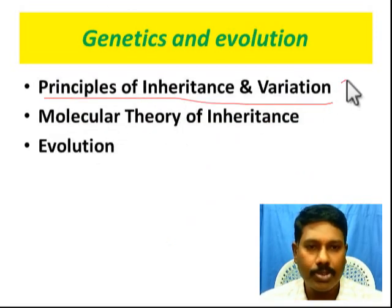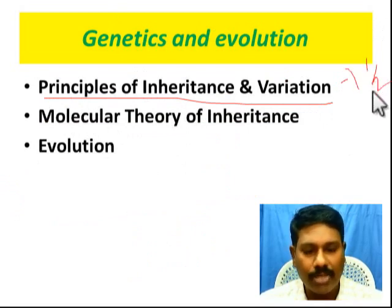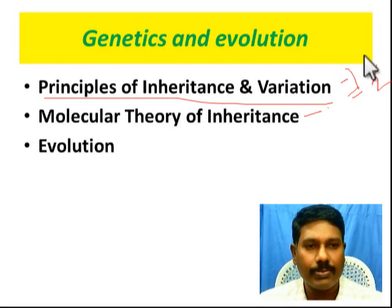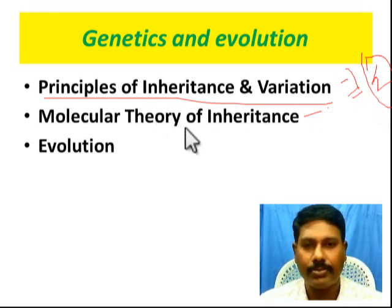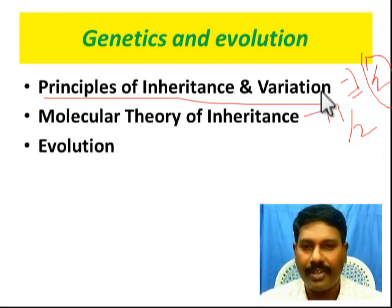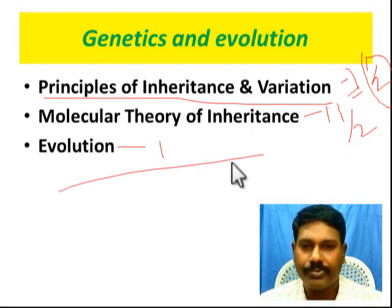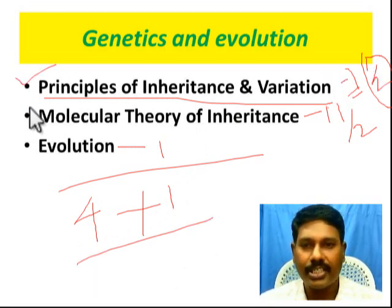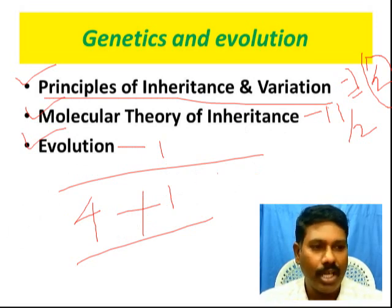In genetics and evolution, principles of inheritance and variation takes 4 hours per chapter. If you learn the theory of inheritance, you can do 4 hours per chapter - about 3 days, with 1 and a half days for some chapters. Totally you have to utilize 5 days for the genetics and evolution unit. So totally 10 days covers two chapters.